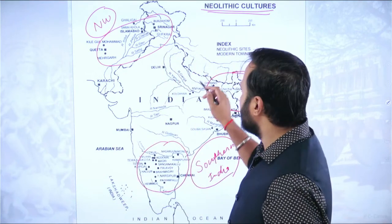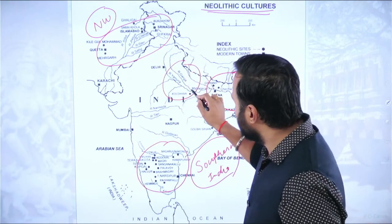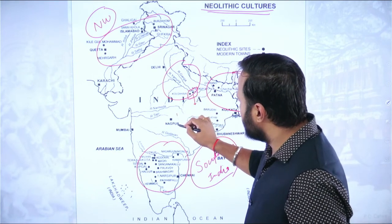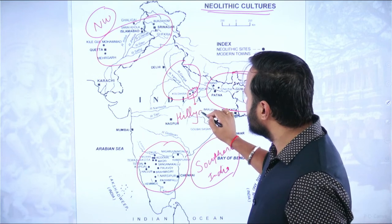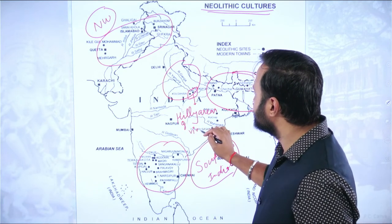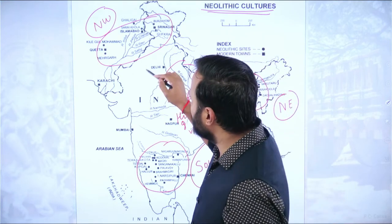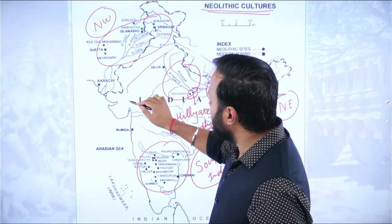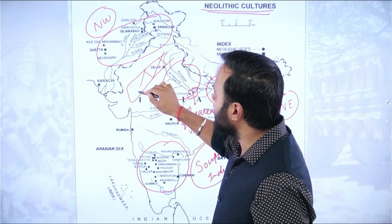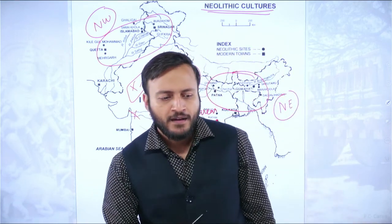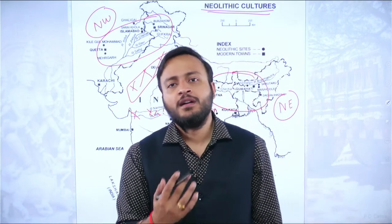You need to understand why Neolithic settlements are found in these places and not in the Gangetic plains — except for a few locations in the hilly areas of Vindhya. You do not find any significant site containing evidences of the Neolithic age anywhere in the plains or in the river valleys. Why is that so?